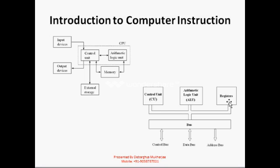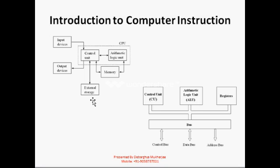To interact with other devices like external storage devices such as hard disk, CD-ROM, pen drive, and input devices like keyboard and mouse, and output devices like printer or video, we use some buses called control bus, data bus, and address bus. These buses are used to communicate between our CPU and other devices.